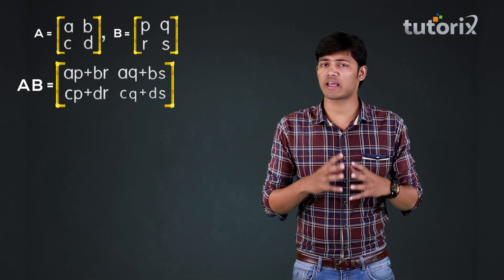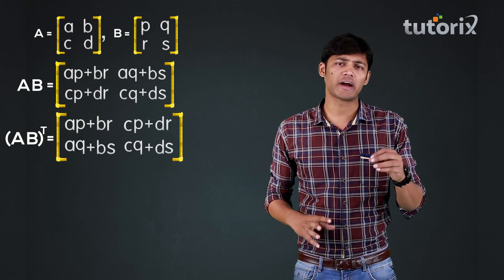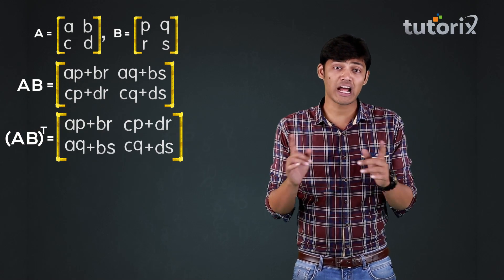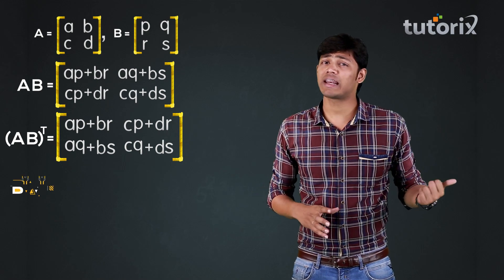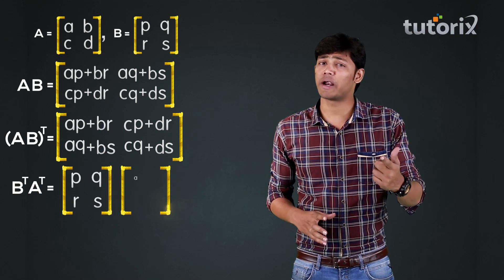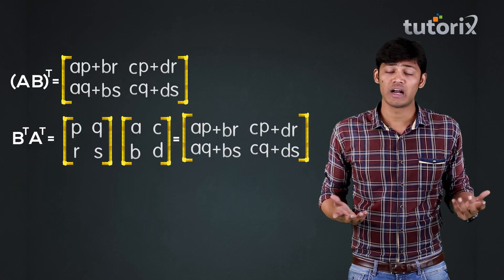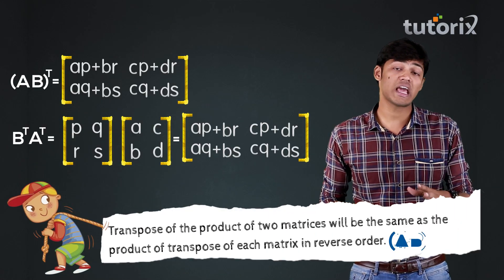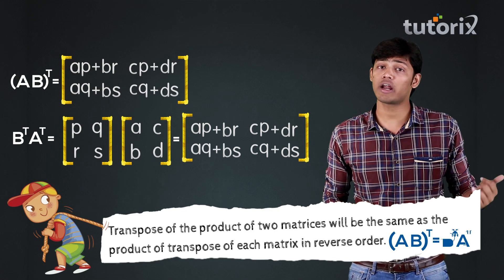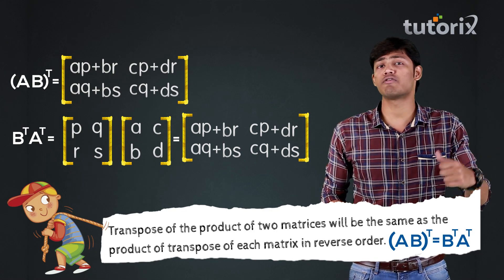This time let us find the transpose of the matrix AB. Surprisingly, we will find that the transpose of the matrix AB will be the same as B transpose multiplied by A transpose. That is, the transpose of the product of two matrices will be the same as the product of the transpose of each matrix in reverse order.